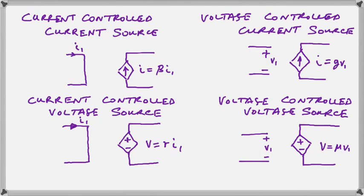In the case of mu, down in the bottom right-hand side, we have a voltage being controlled by another voltage. And the mu is just a number, basically an amplification factor that multiplies the small V1 to get the big V.